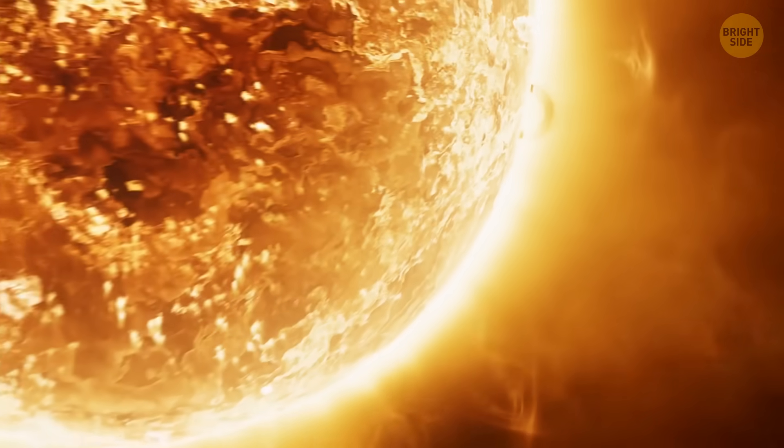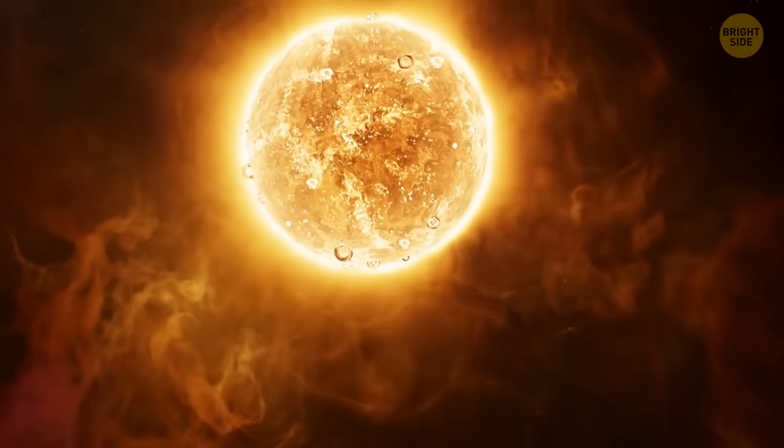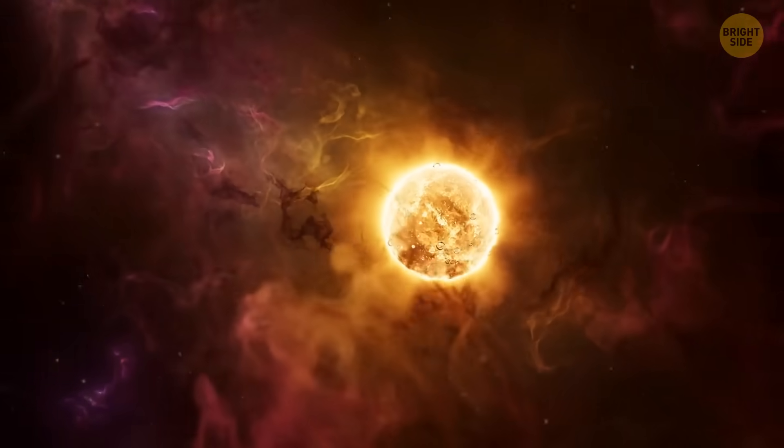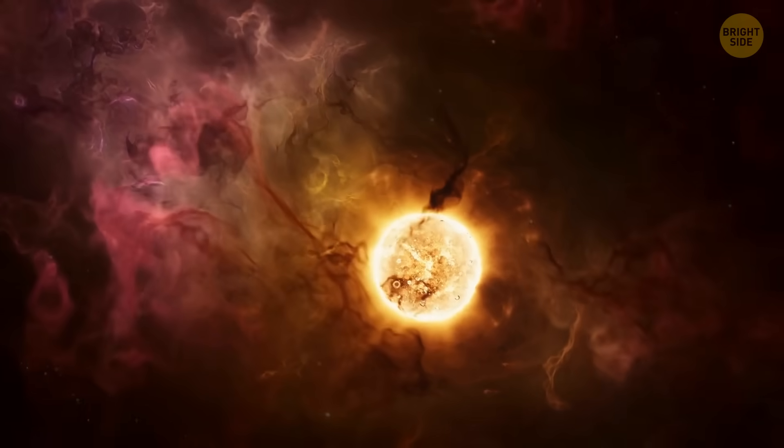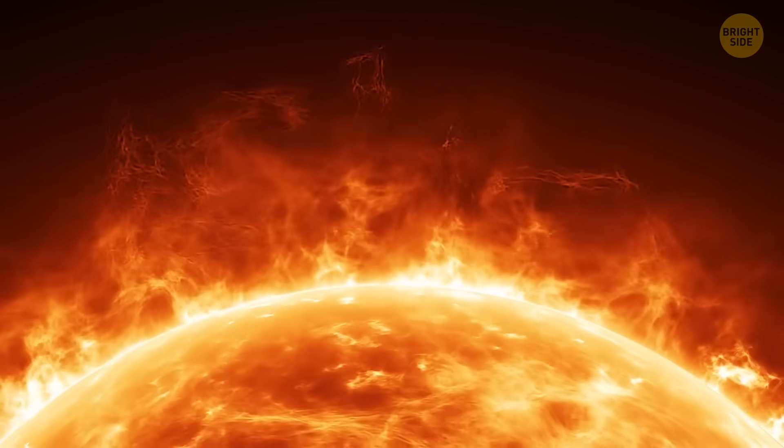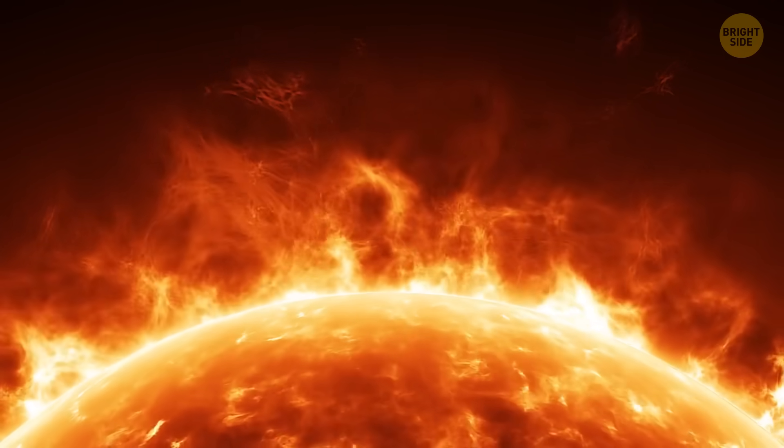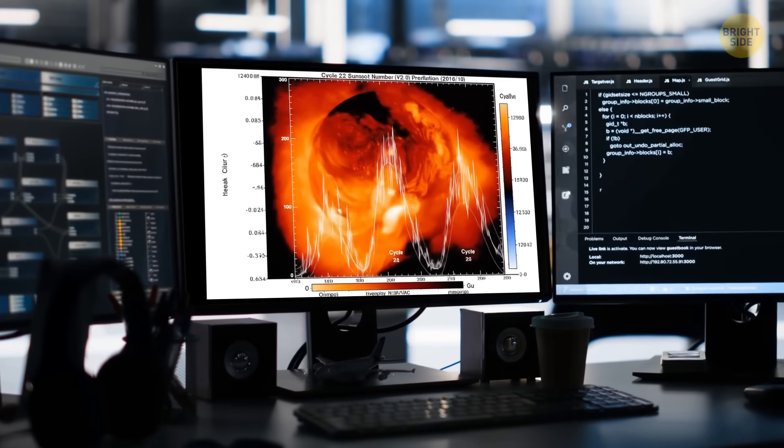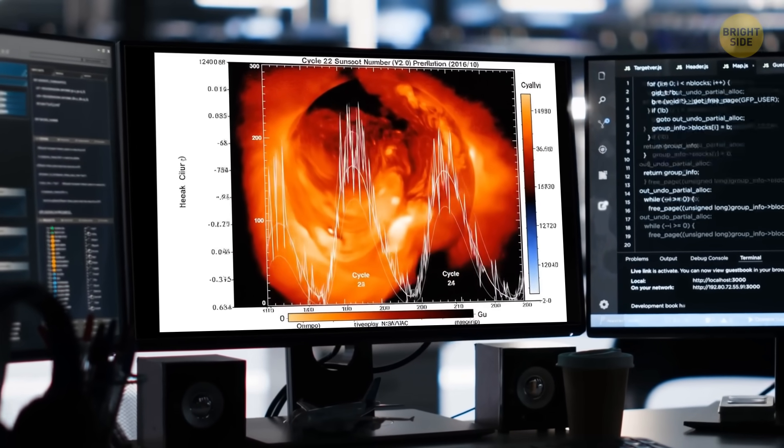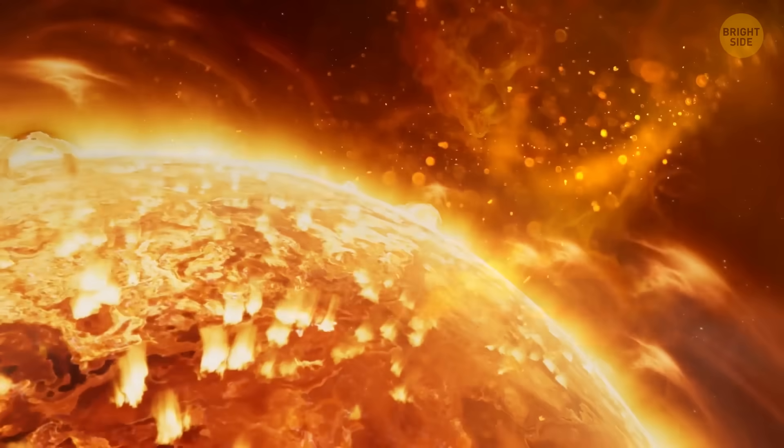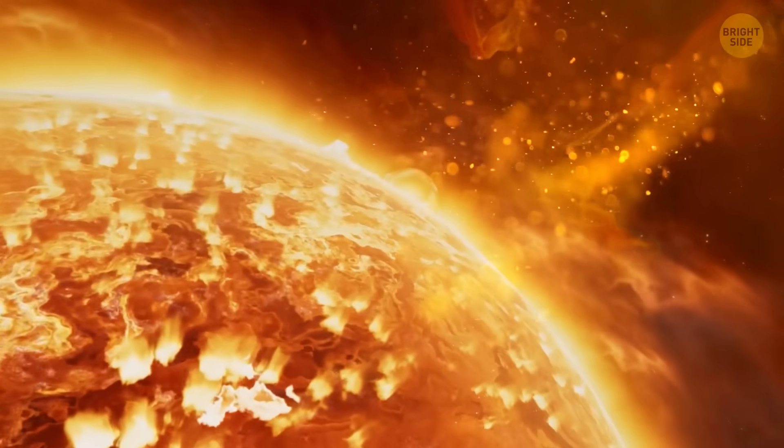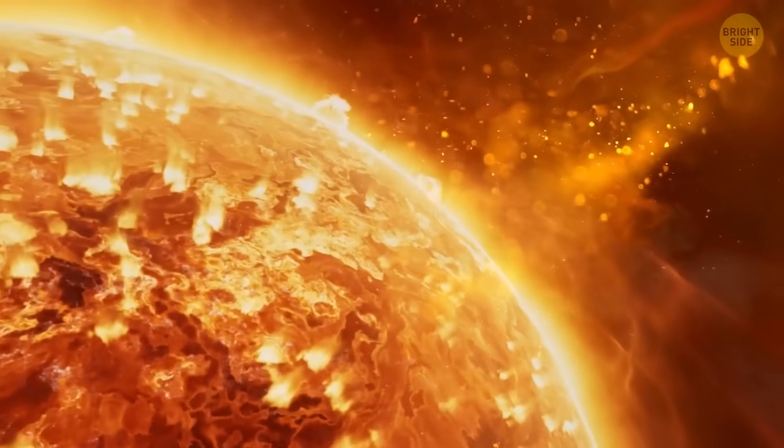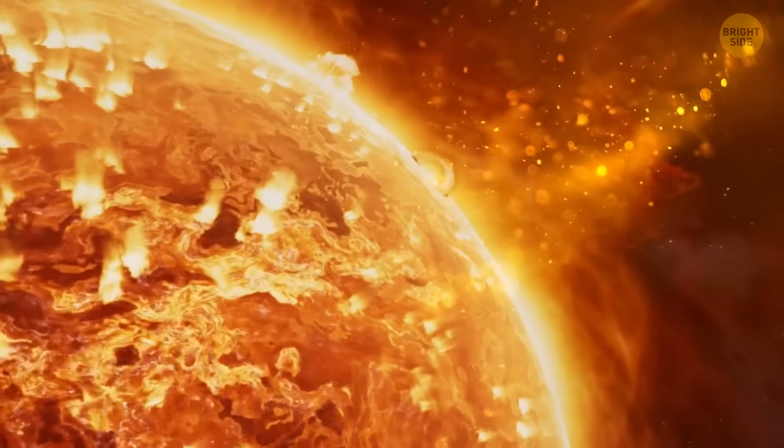A mysterious 100-year solar cycle may have just restarted, and it could mean decades of dangerous space weather. New research suggests that the unexpected intensity of the ongoing solar maximum may be partly tied to a lesser-known 100-year solar cycle. If the Sun is indeed entering its villain arc, solar activity could spike even further in the coming decades.